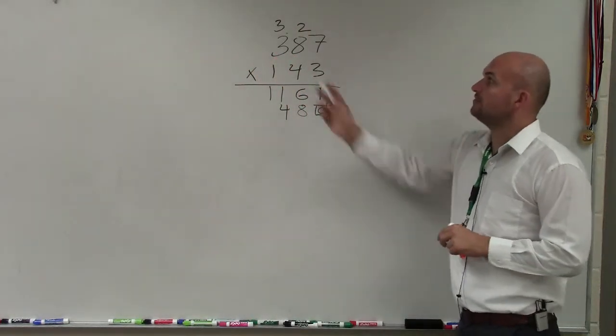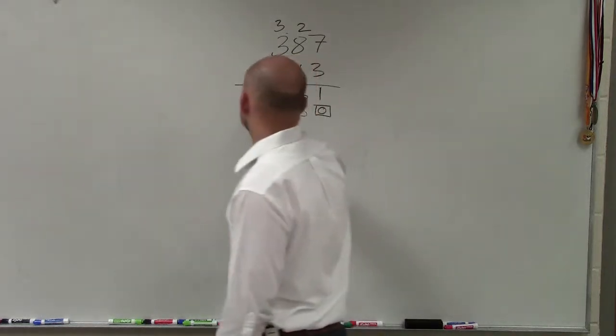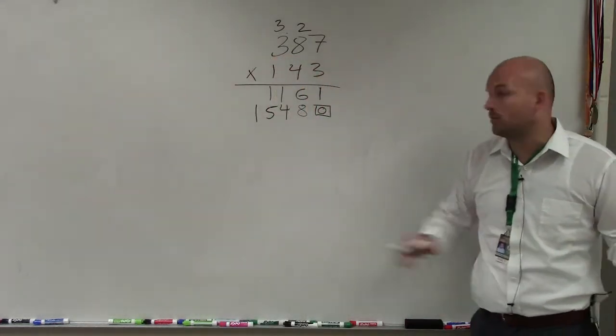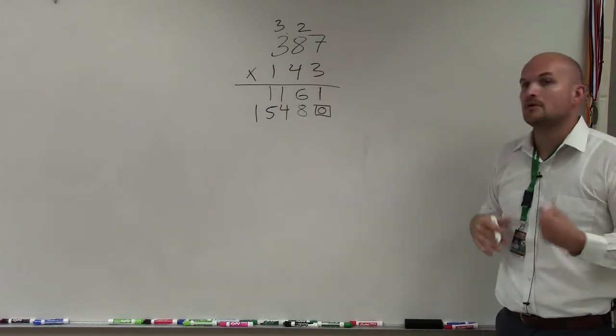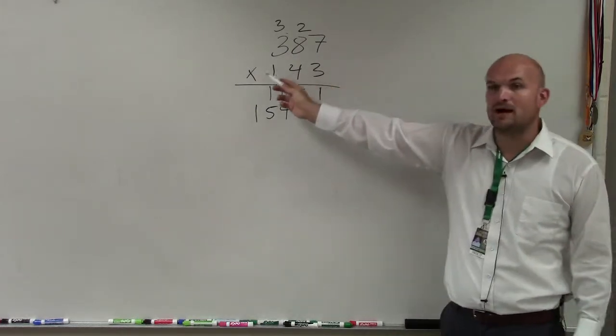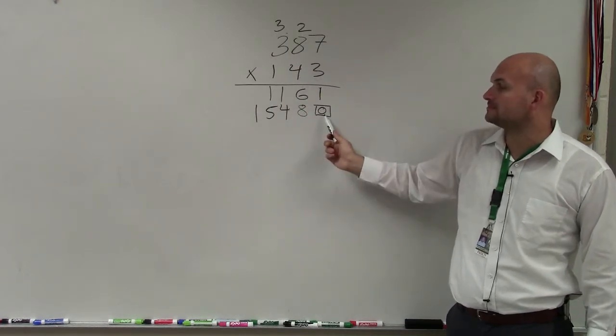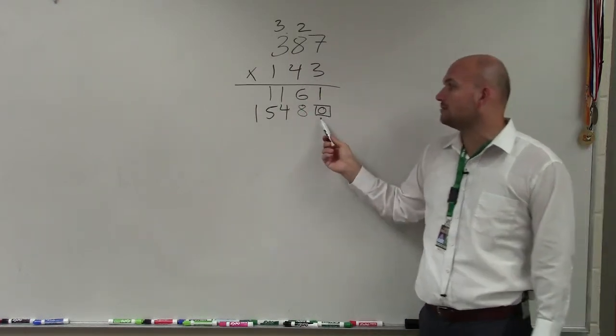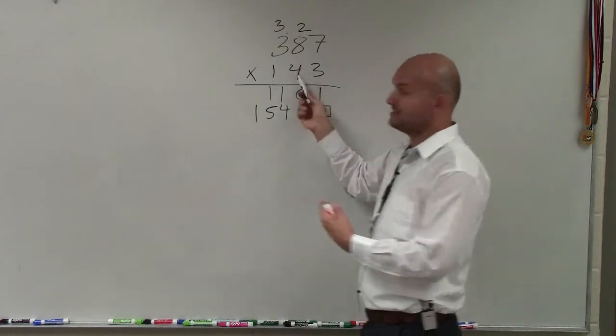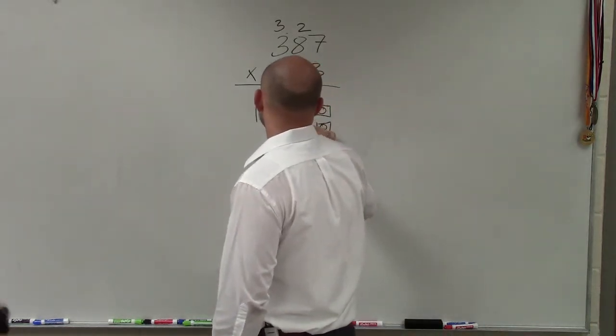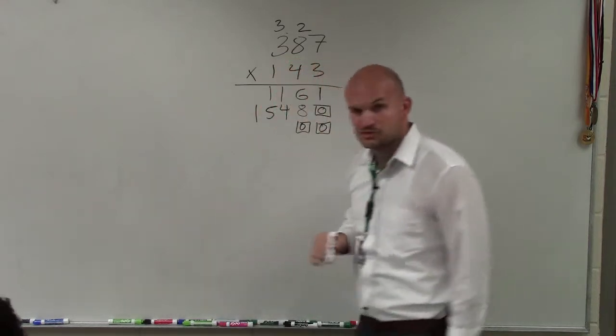4 times 3, which is 12, plus 3 is 15. There's no place for me to carry over the 1, so I can write it down below. So now I move to my third digit. So since I had one space holder for the second digit, I'm going to need two space holders for the third digit. And you just continue that process for however many digits you have.